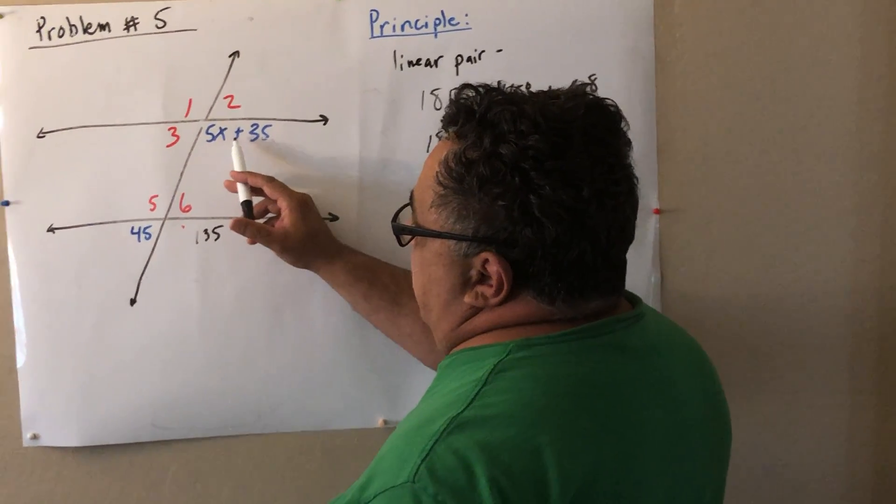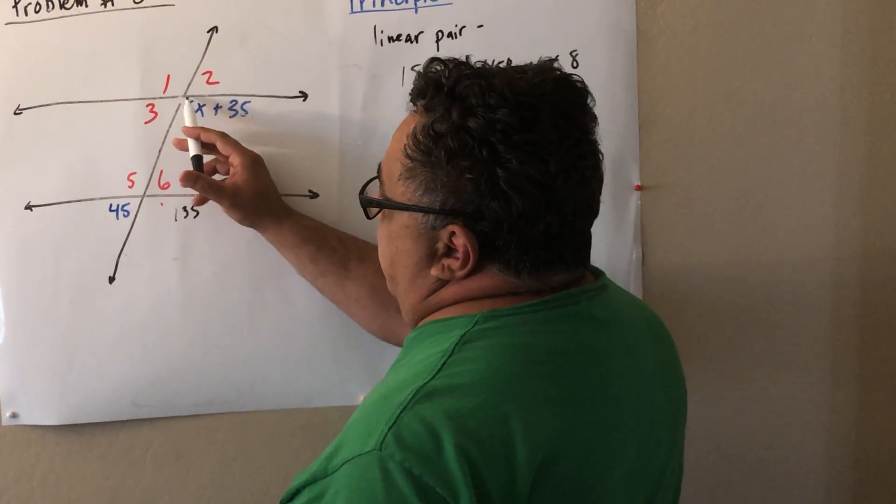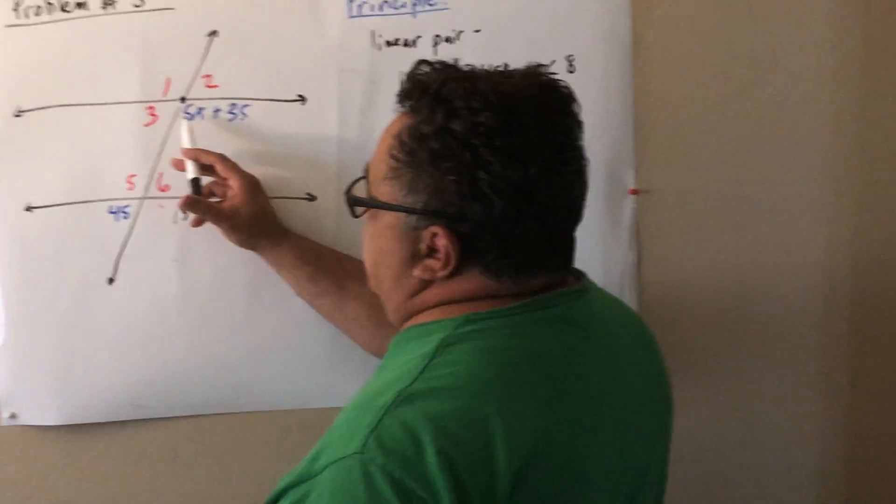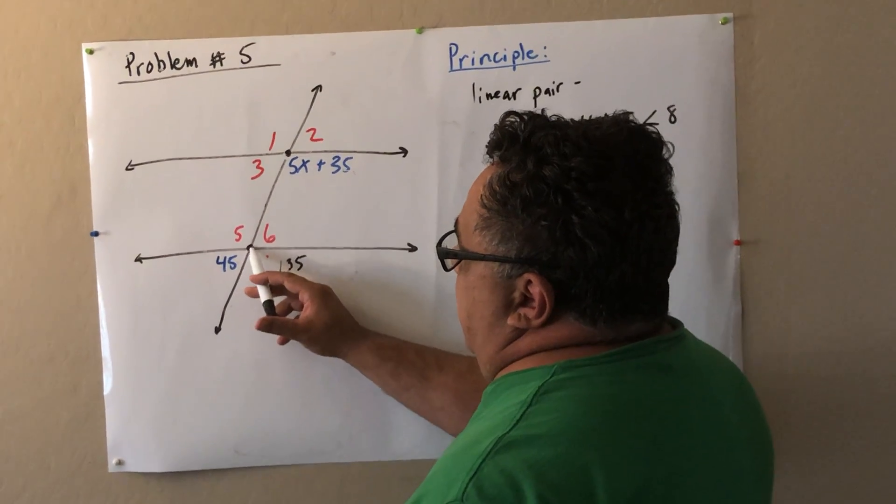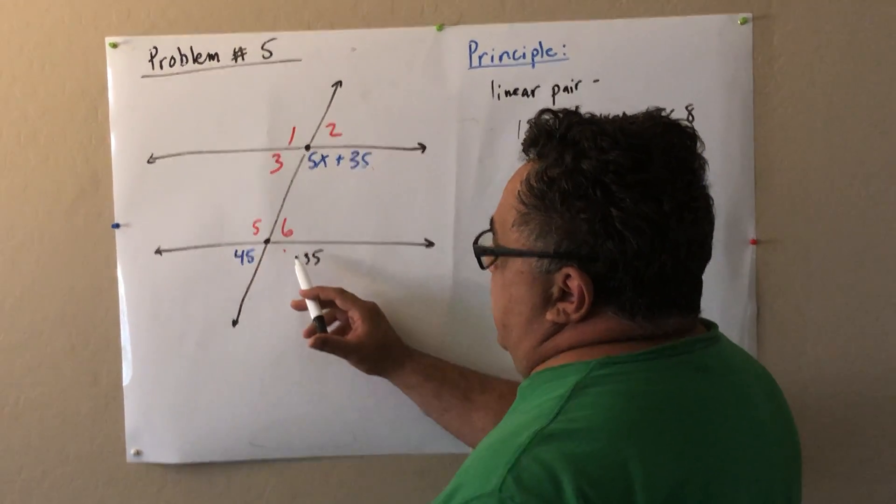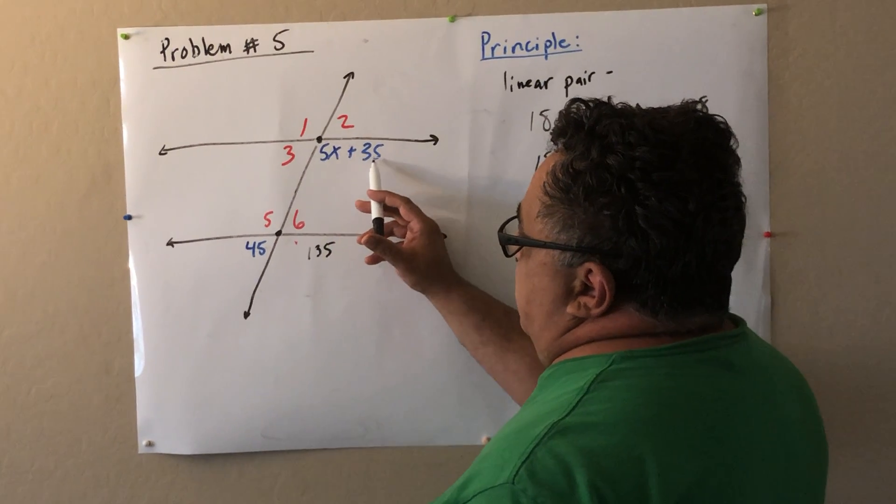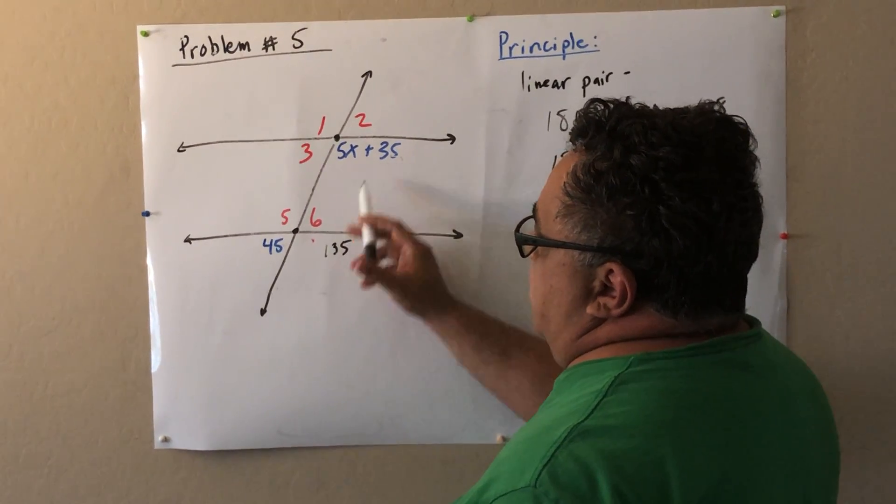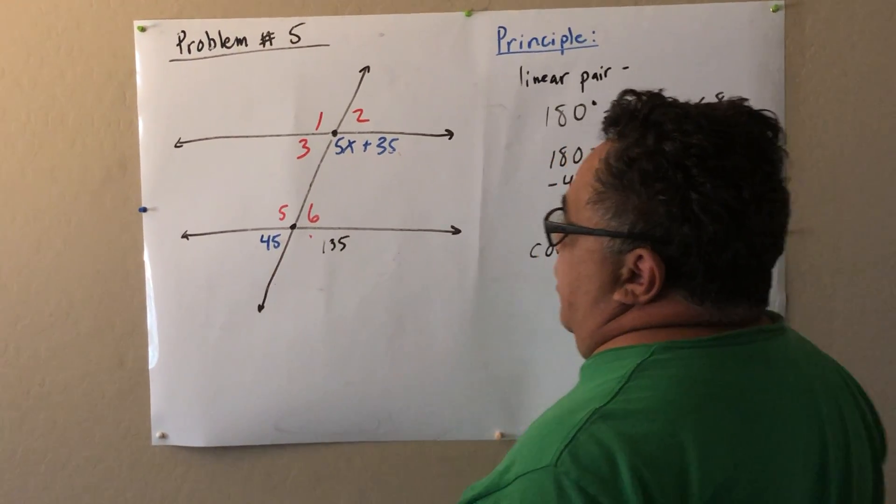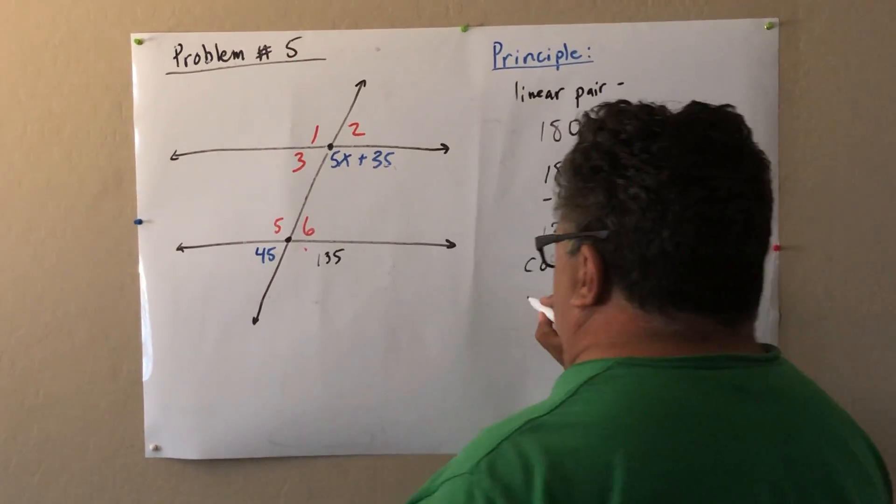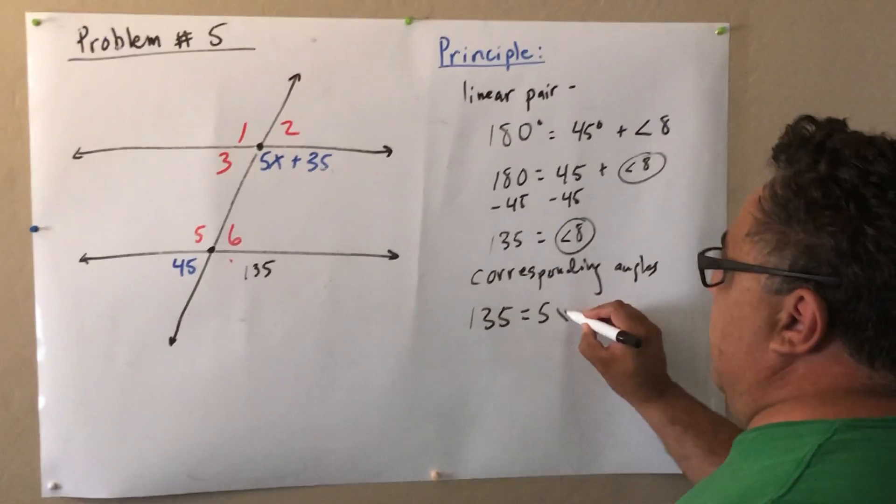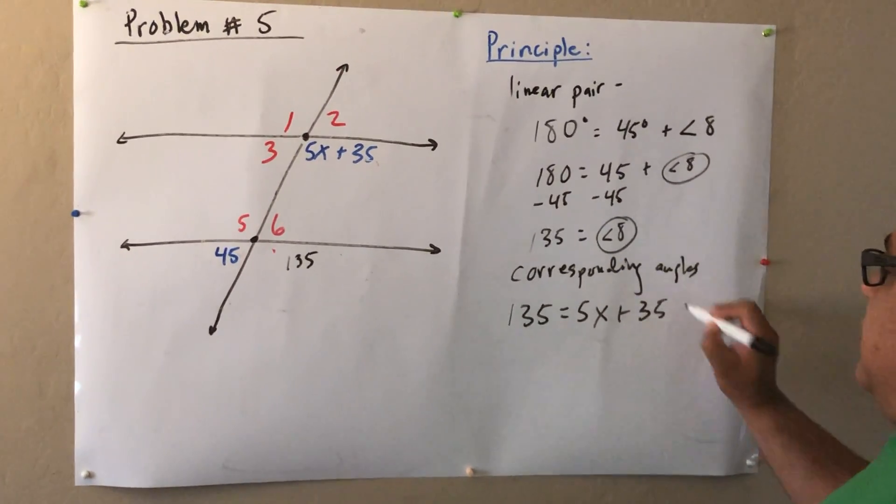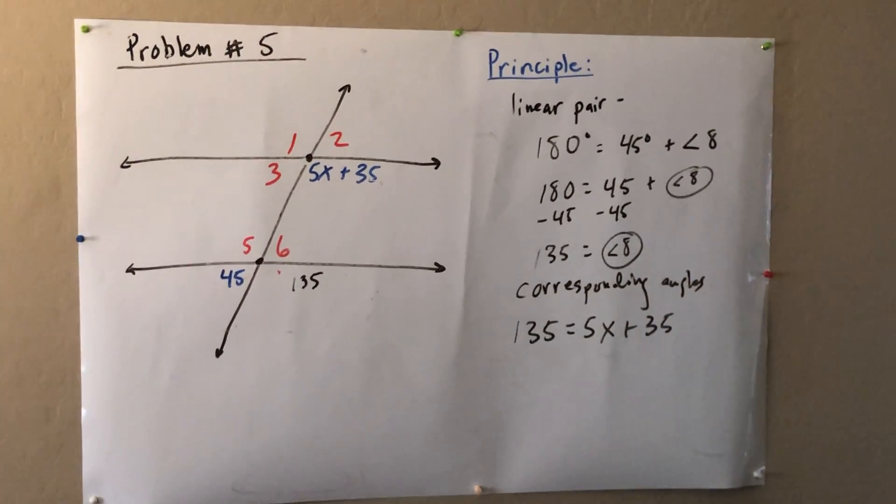5x plus 35 because this is on the bottom. If I put a dot right here and make this an intersection, this is on the bottom right of our intersection. I'll put a dot right here. If there were four cars parked at this four-way stop, 5x plus 35 is on the bottom right of this four-way stop. 135 degrees on the bottom of this four-way stop. Corresponding angles are congruent which means I can set them equal to each other which means I can solve for x which is what I wanted to do this whole time.